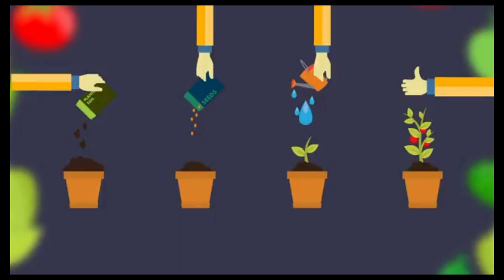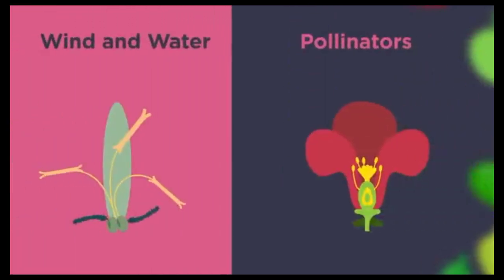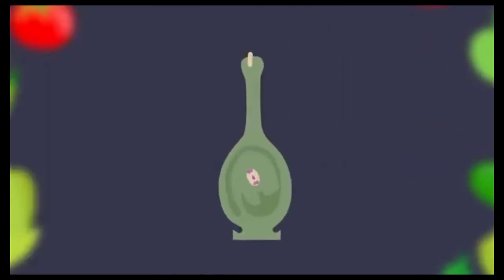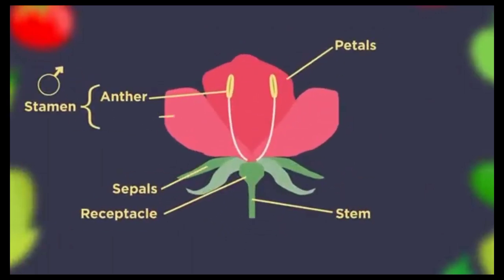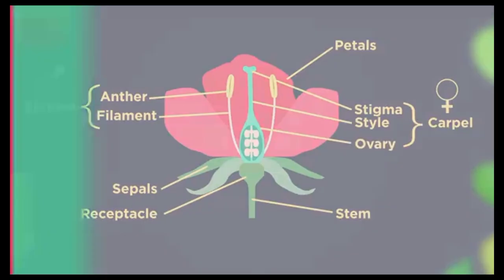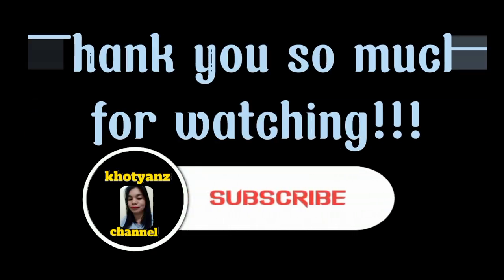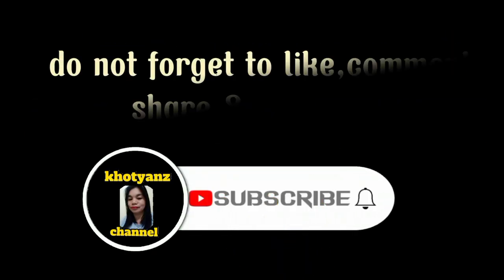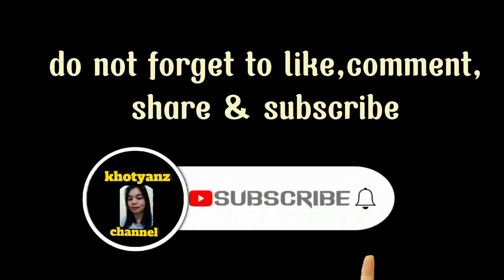So there we have sexual reproduction in plants. Pollination has to happen before fertilization. The male pollen is produced in the anther, where it is then dispersed during pollination. The female parts of the flower are the stigma, style, and the ovary. Thank you so much for watching — don't forget to like, comment, share, and subscribe.